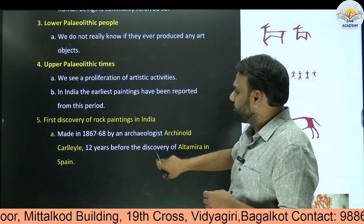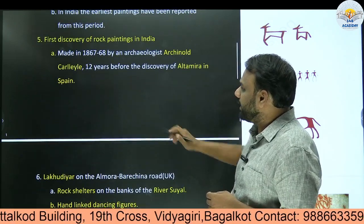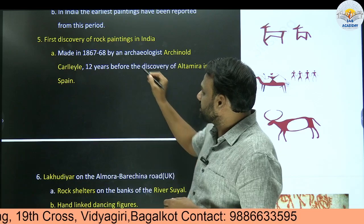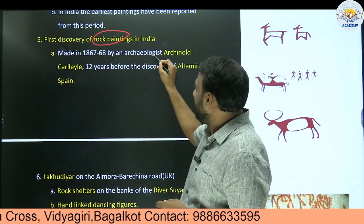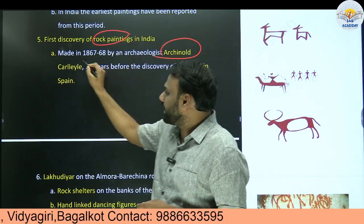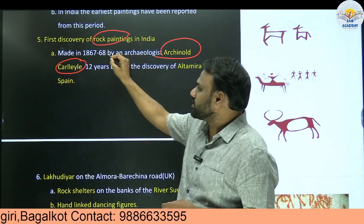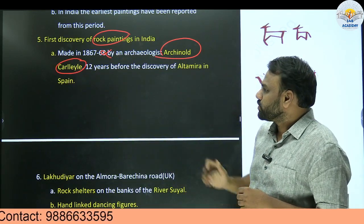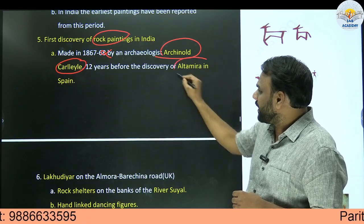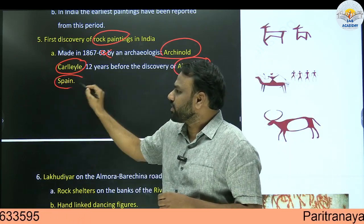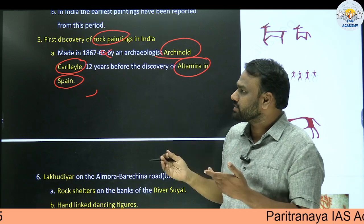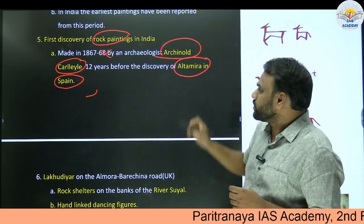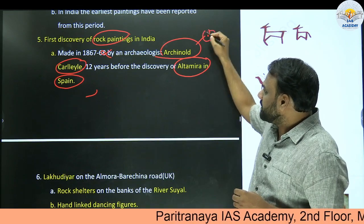Next: the first discovery of rock painting in India. The first discovery was made by archaeologist Archenold Keryl. The year is not that important, but the name of the archaeologist is very important. This discovery was made 12 years before the discovery of Altamira in Spain. A similar discovery was made in Spain, but India's discovery preceded it by 12 years.